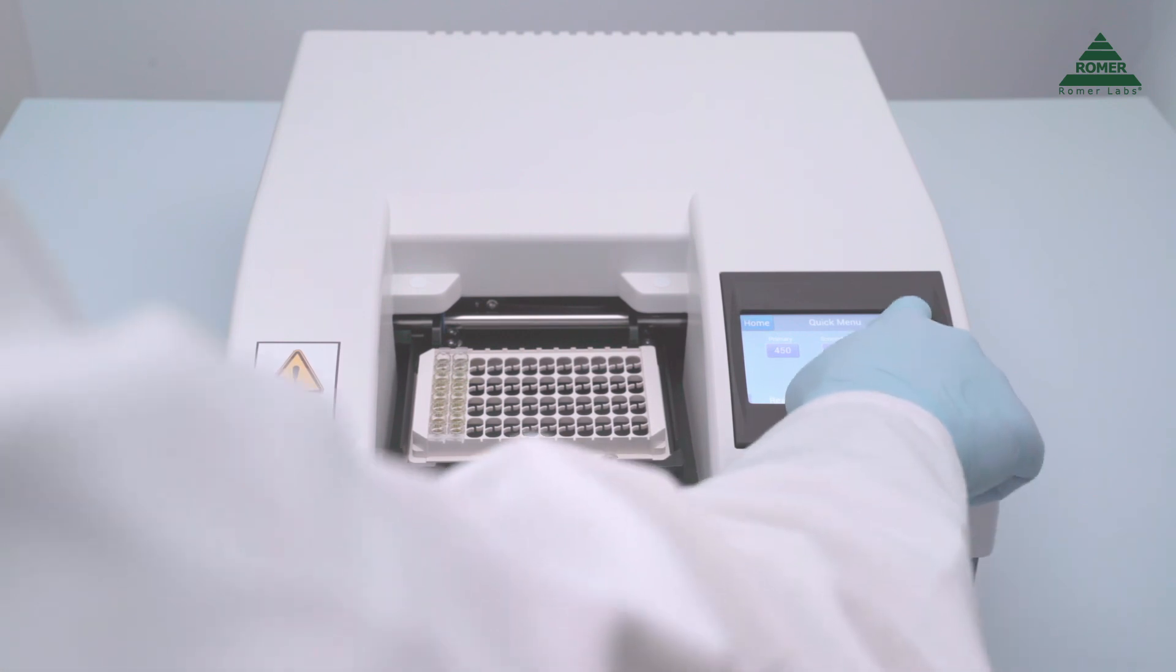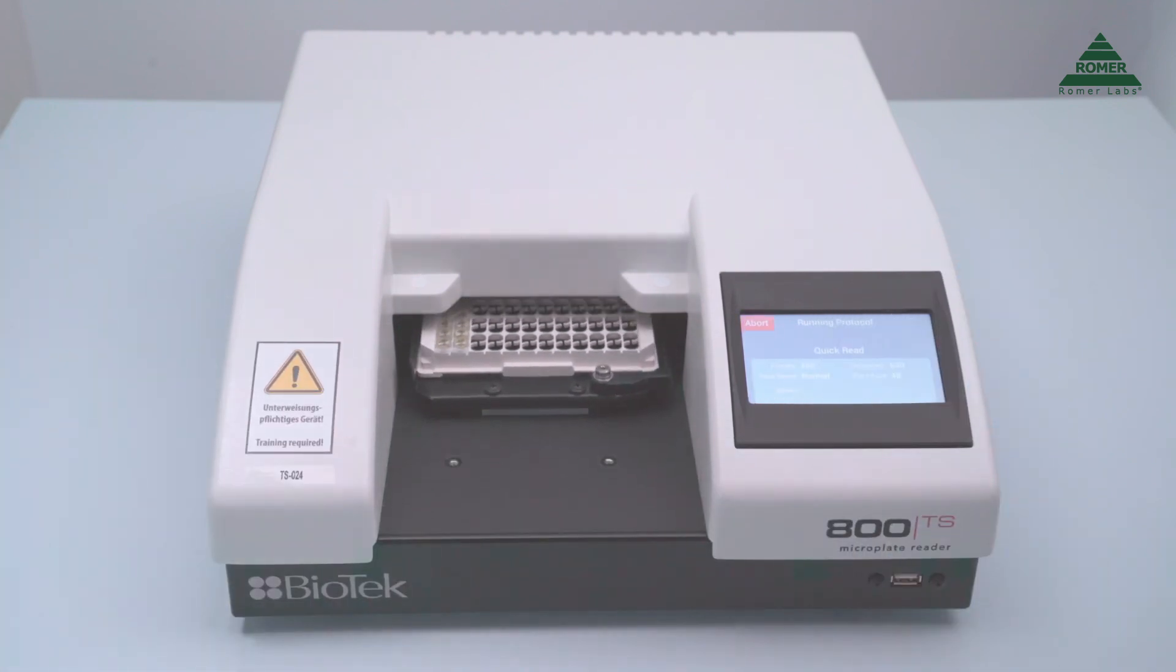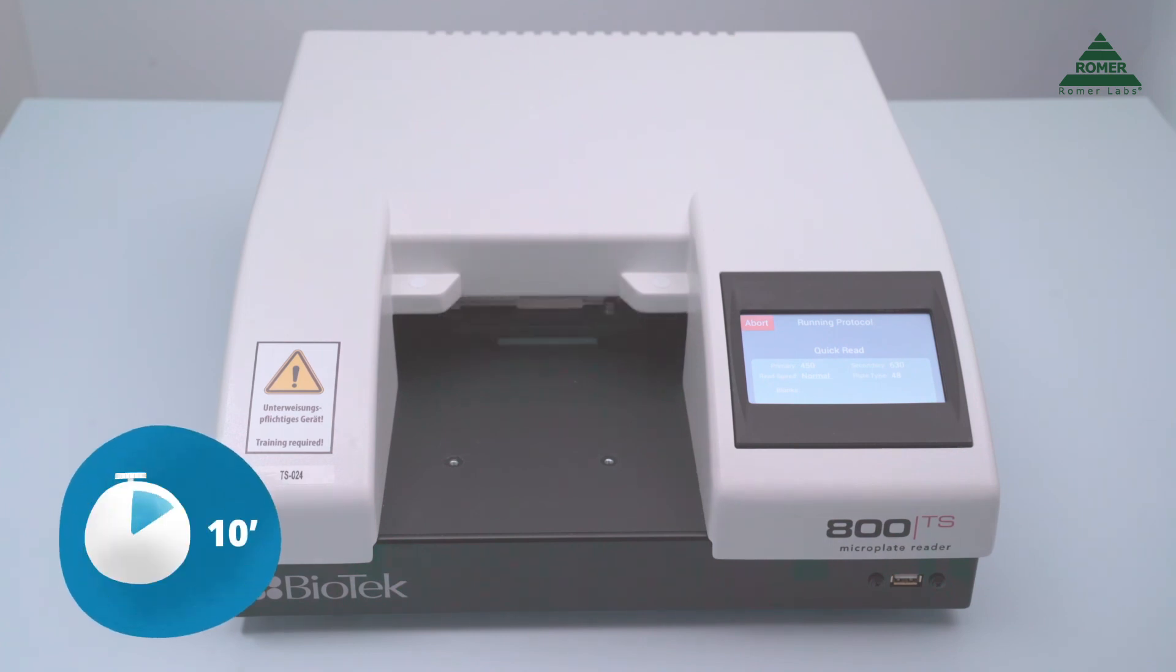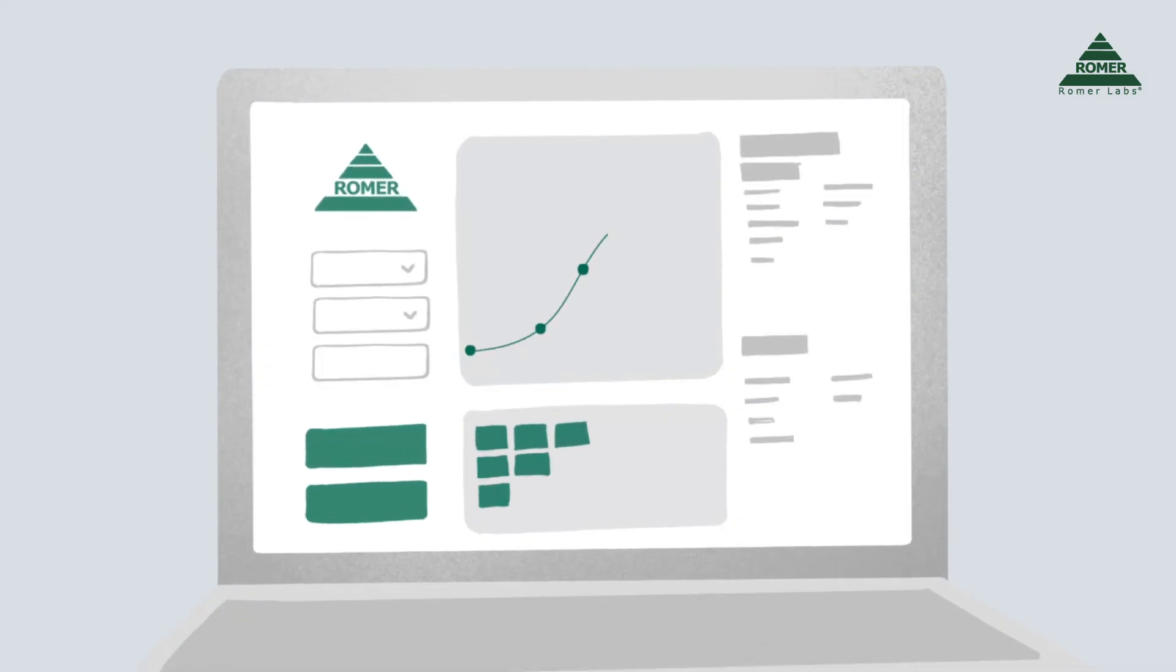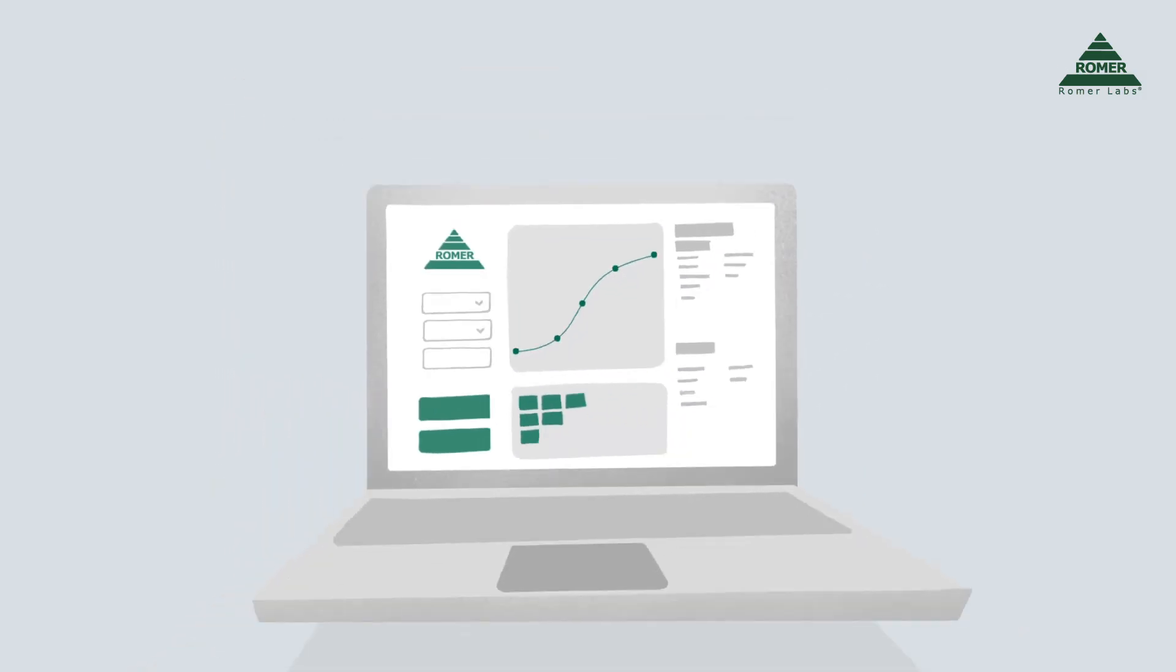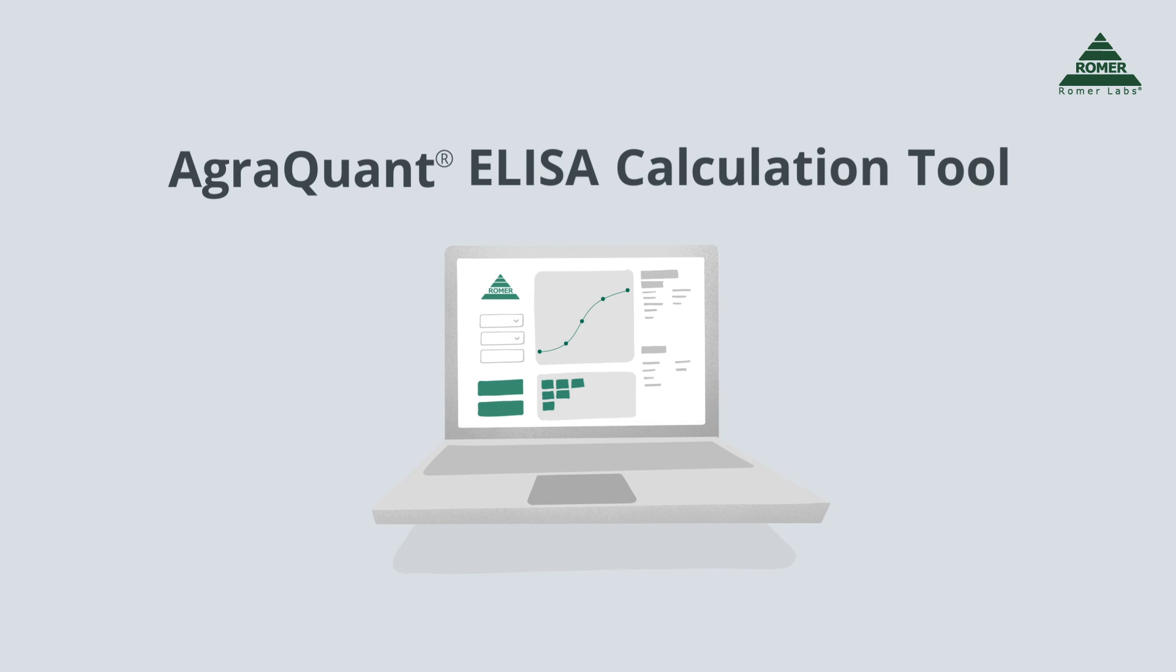Read the absorbance of the plate at 450 nanometers using a reference wavelength of 630 nanometers. This step must be performed within 10 minutes of adding the stop solution. You can analyze the data obtained from the microtiter reader by using the AgriQuant ELISA calculation tool.